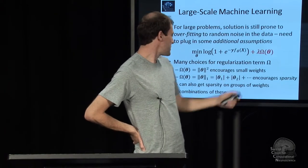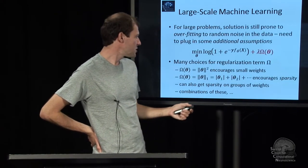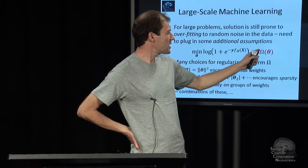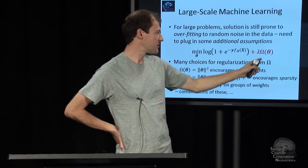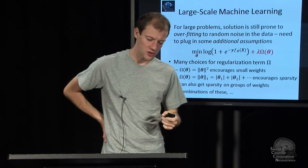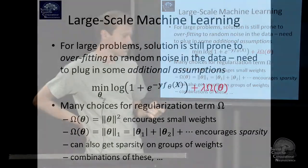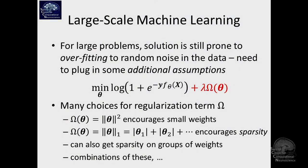So the key is what kind of stuff you put into this omega of theta. It's a function of your parameters, and it sort of quantifies costs that are in agreement with your assumptions that you had.